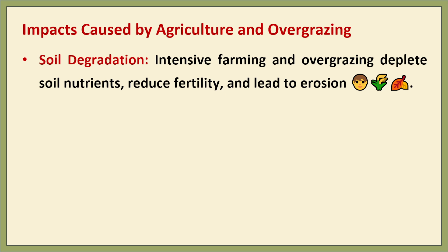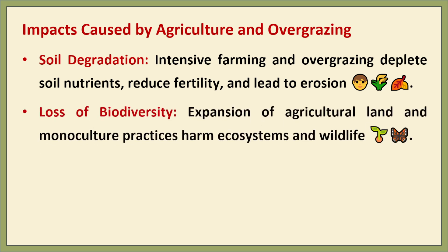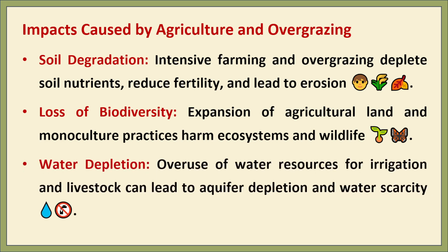Impact caused by agriculture and overgrazing. Agriculture and livestock grazing are essential, but when overdone they lead to several problems: soil degradation, where over-farming and grazing remove essential nutrients making soil less fertile and more prone to erosion; loss of biodiversity as large-scale farming and deforestation reduce the variety of life; and water depletion, as irrigation and maintaining livestock use up huge amounts of water, leading to groundwater exhaustion.